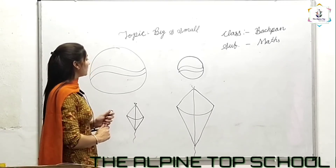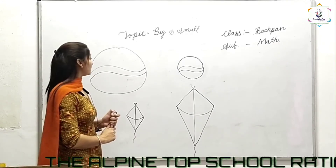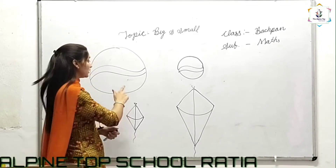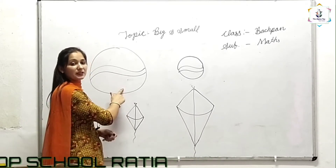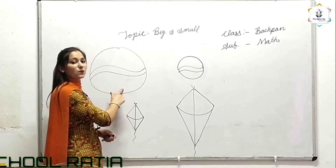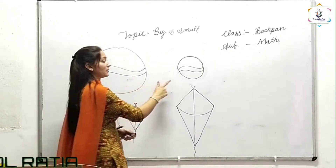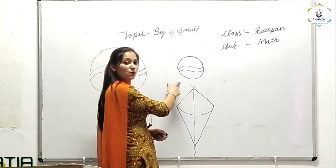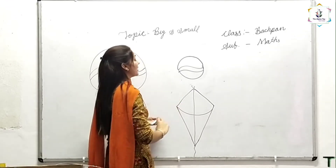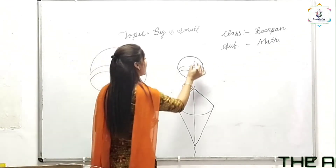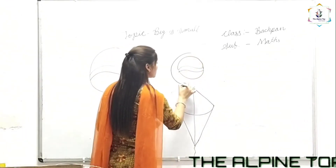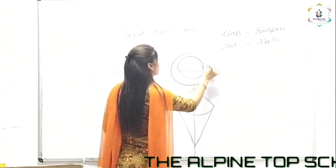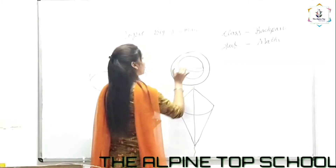Tell me which one is big and which one is small. Is this small? No, this is the big ball. And this is the small ball. Circle the small ball.